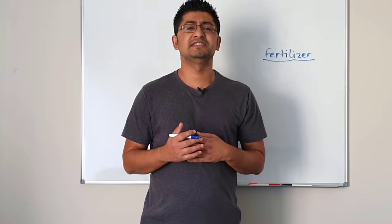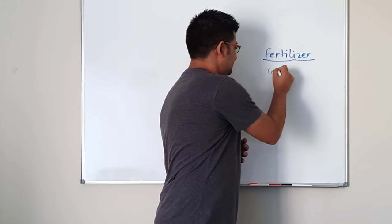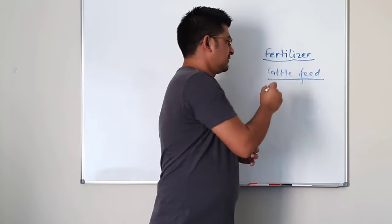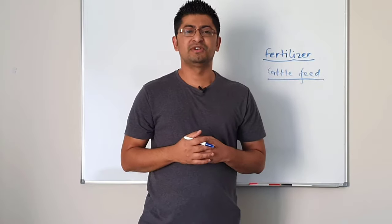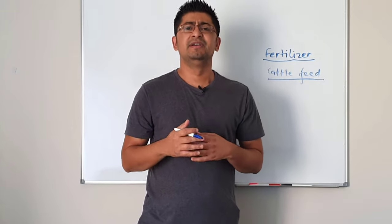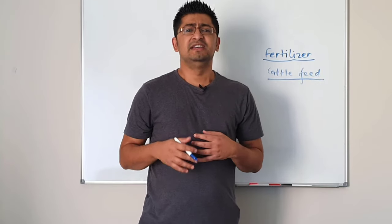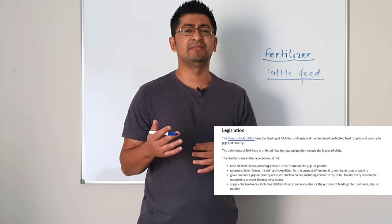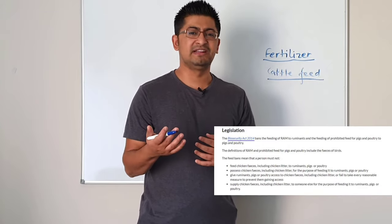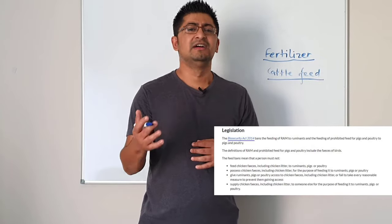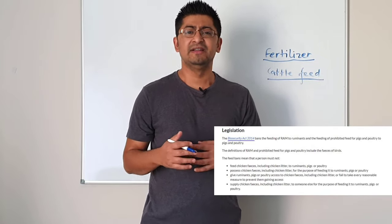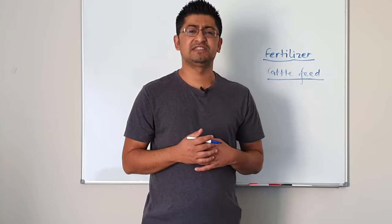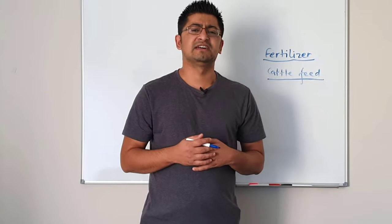Another use of broiler litter is it can be used as cattle feed. In some countries like Australia, it has been banned and is referred to as a restricted animal material due to the risk of salmonellosis, bovine spongiform encephalopathy, and several other bacterial issues. However, there are several other countries where it is still in practice, and if it is processed nicely, it can be used as cattle feed.